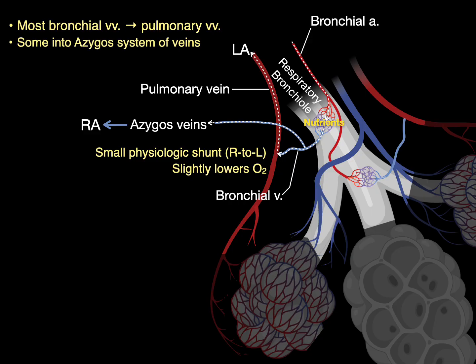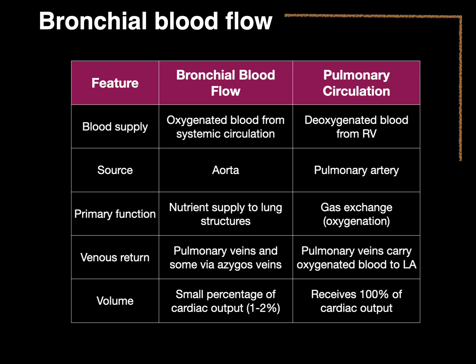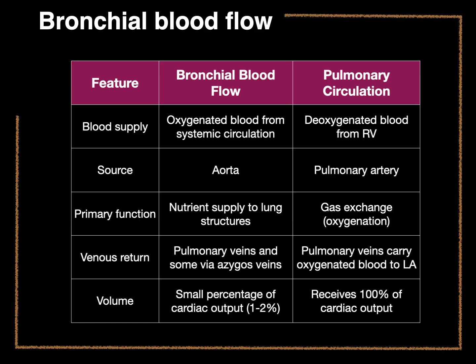In summary: most bronchial veins carry deoxygenated blood and drain into the pulmonary veins carrying oxygenated blood, creating that small physiological shunt. Some bronchial veins drain directly into the azygous system of veins. And that is bronchial blood flow in a nutshell.